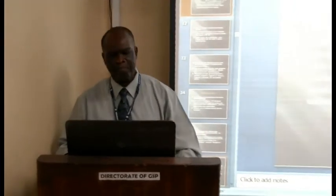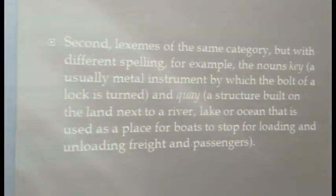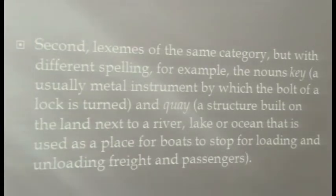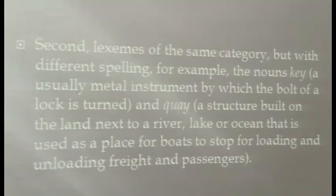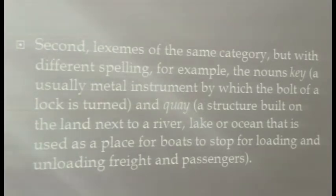The second type of homonyms in English are words of the same category but with different spelling. The first is spelled K-E-Y, while the second is spelled Q-U-A-Y, but both share the same pronunciation. These two words have different meanings: 'key' is normally a metal instrument by which a lock is opened, while 'quay' is a structure built on land next to a river.